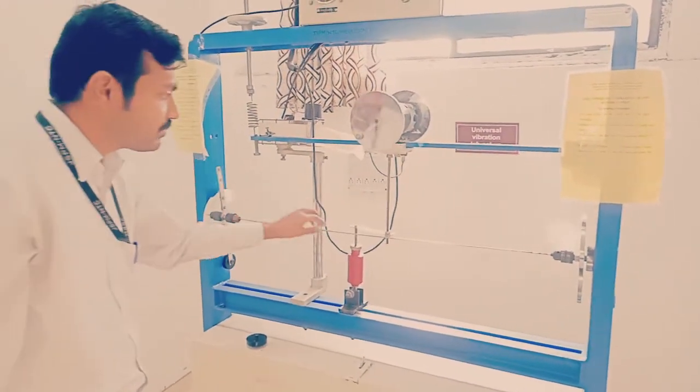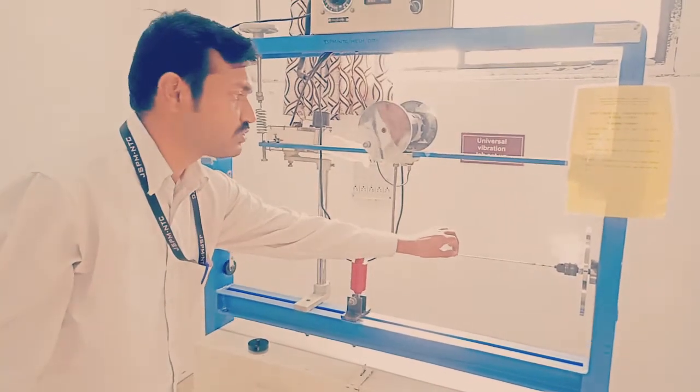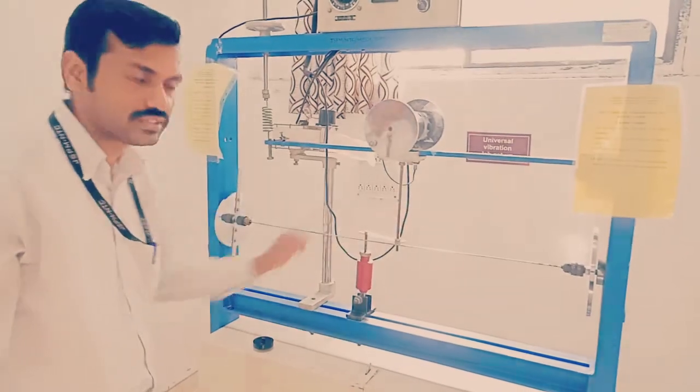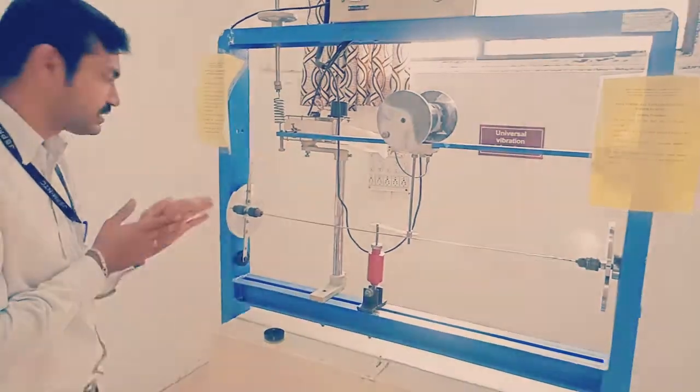What is the node point? The node point is point of zero amplitude where there is no twisting takes place. We have to find out the location of that point from this experiment. First, we have to measure the diameter of shaft.